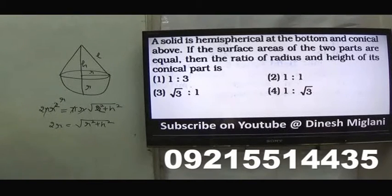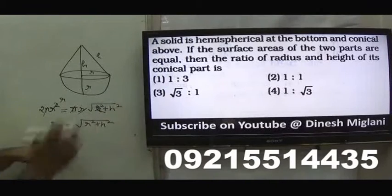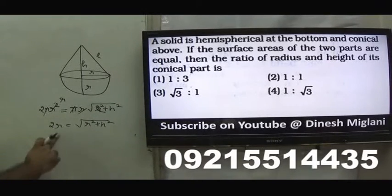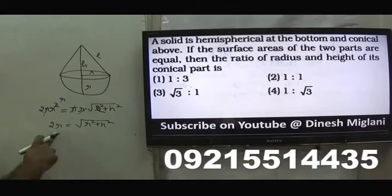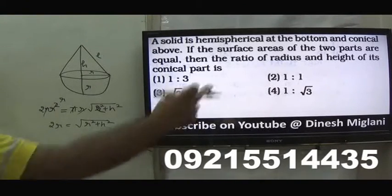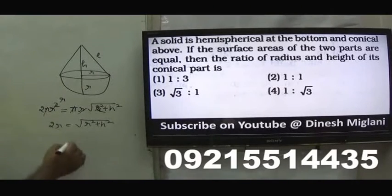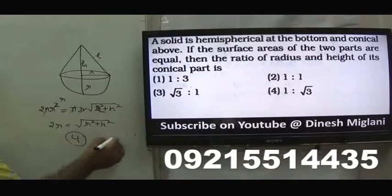Trying the options: if r=1 and h=√3, that gives 2√3 on the left, and √(3+1)=√4=2 — not equal. Trying option 4 with r=1 and h=√3: left side is 2, right side is √(1+3)=√4=2. Both are the same, so the answer is the fourth option: r:h = 1:√3.